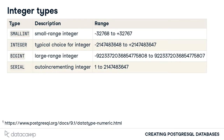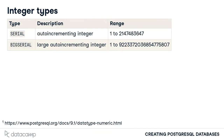Serial is a positive integer type that increments by one each time a new record is added to a table, making it a good choice for representing primary keys. The bigserial type would be a good choice for a table tracking NYC subway rides in a given year, assigning a unique ID to each trip taken.